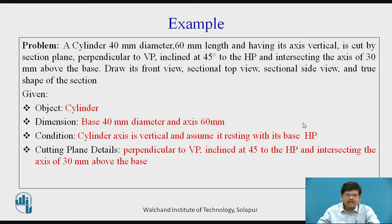Then we have the cutting plane details. As I mentioned earlier, we have three conditions. One is perpendicular to VP. Second is inclined at 45 degrees to HP. And then intersecting the axis at 30 mm above the base.